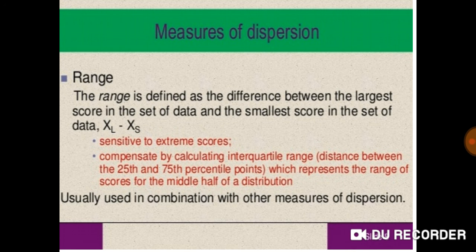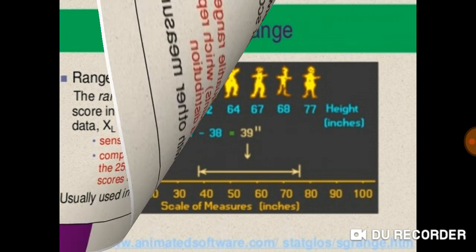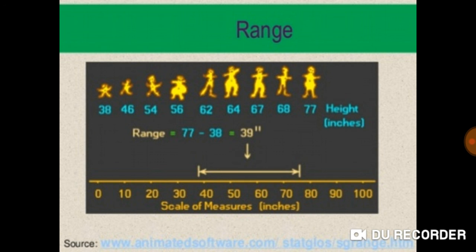To compensate by calculating interquartile range, the distance between the 25th and 75th percentile points which represents the range of scores for the middle half of a distribution. Usually used in combination with other measures of dispersion.